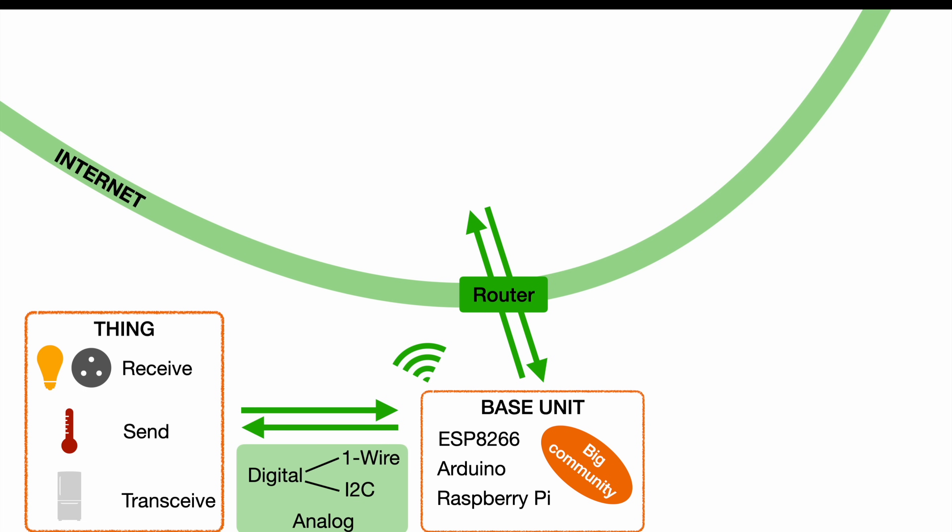We need another type of protocol to make this communication happen. We can use something like HTTPS, which you already know from websites, where the S stands for secure. A more IoT-related protocol like MQTT, which is also known as the IoT protocol, will fit our needs more conveniently. If you want to learn more about MQTT, make sure to check out our MQTT basics video.